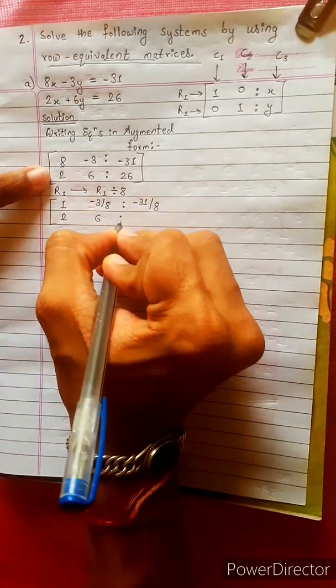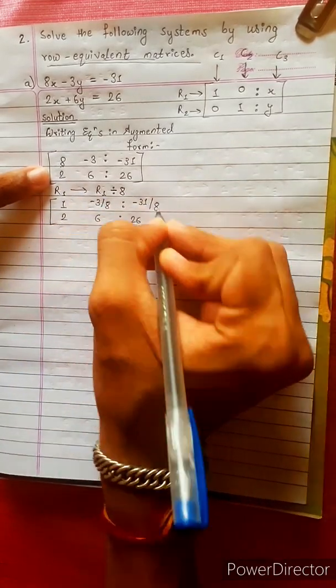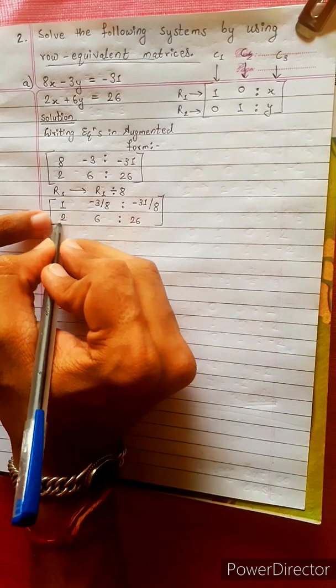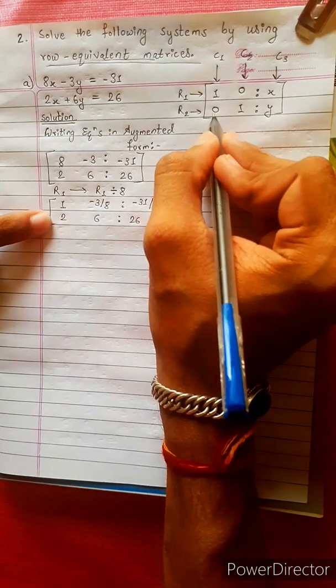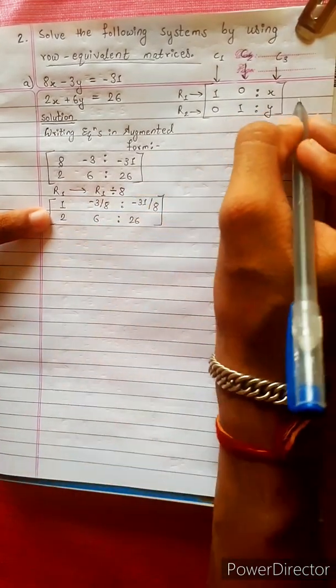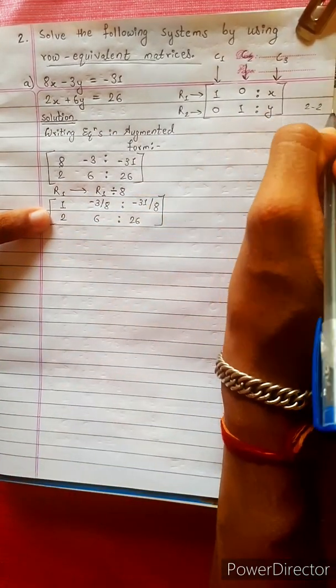R2 is changed: 2, 6, 26. This is 0. This is 0 — this is 2 minus 2, which is 0.